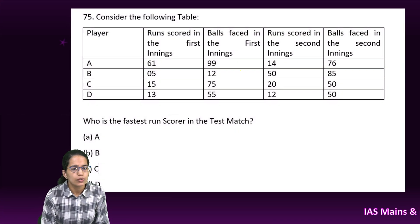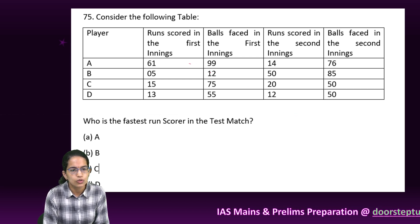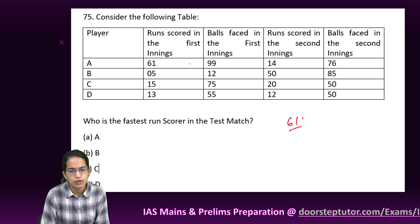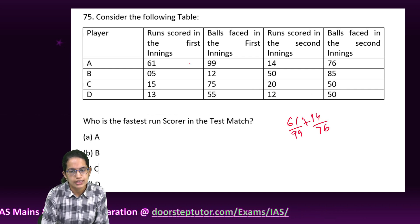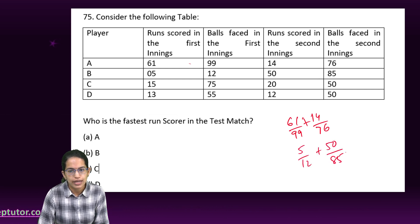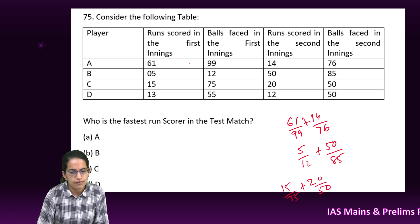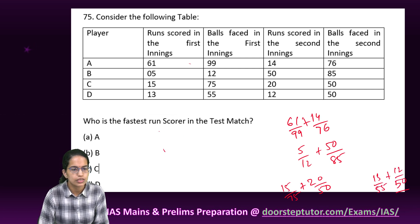The next question is a direct question — you simply solve it by a straightforward logic. The runs scored by each player: A would be 61/99 + 14/76, determining who is the fastest scorer. Similarly calculated for others: 5/12 + 50/85, then 20/50 + 15/75, and 13/55 + 12/50. You calculate all and determine the fastest scorer.